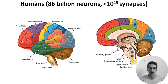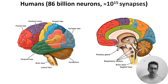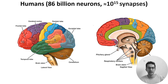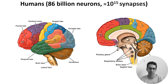Folds are known as gyri and the depressions are known as sulci. Larger depressions or fissures divide the brain into four major lobes: the frontal, parietal, temporal, and occipital lobes. The cerebellum, which we discussed at a micro level in week two, sits at the back. Then at the base there is the brainstem, which connects the brain to the spinal cord.